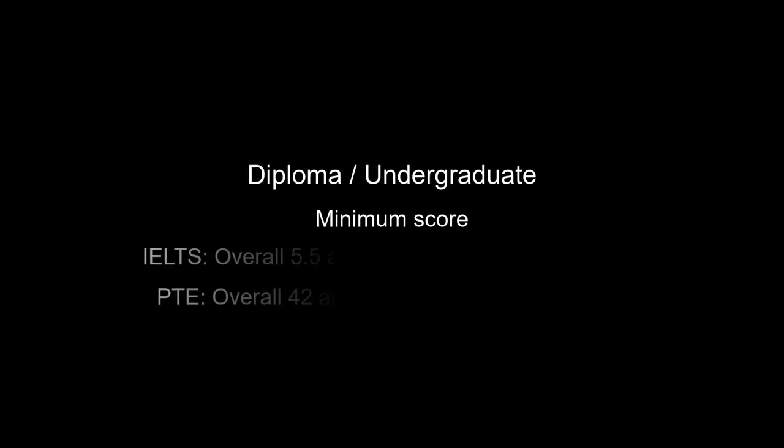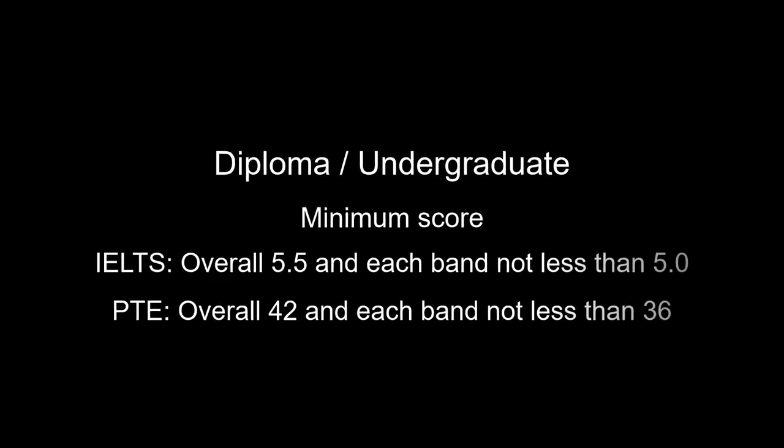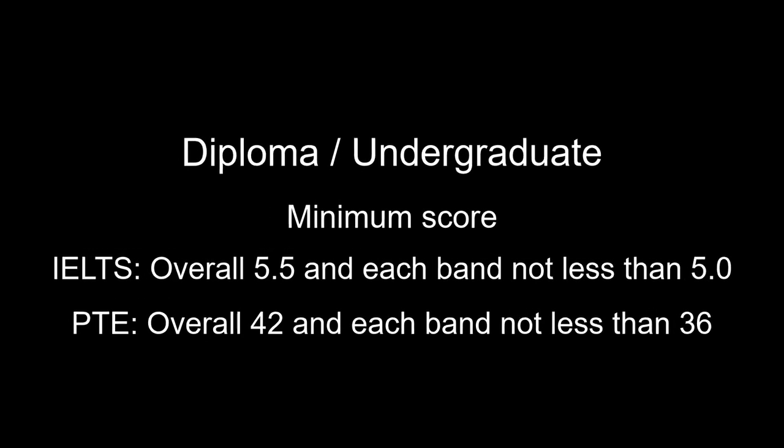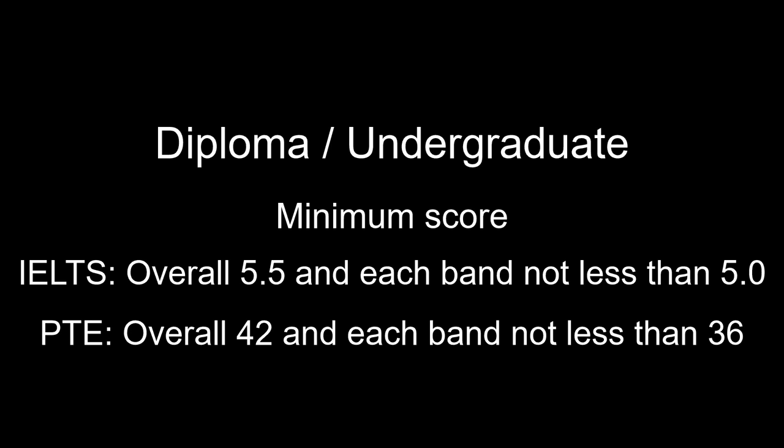If you are going to apply for a diploma or an undergraduate course, you must achieve an overall score of 5.5 in IELTS with no individual band less than 5. Similarly, if you are going to take the PTE test, you will have to score an overall 42 with no individual band less than 36.